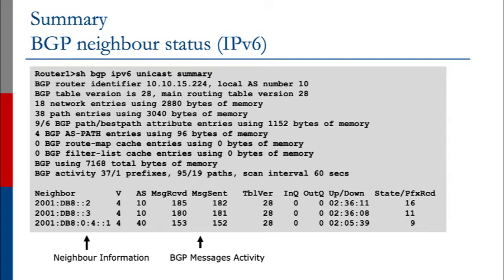If you look near the top of the router display, it also indicates things like the BGP router identifier, which is a unique 32-bit integer identifying the router, as well as the AS number and various other details about how much memory is needed, how many network entries there are, and so forth.